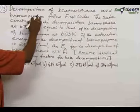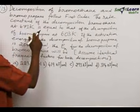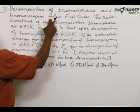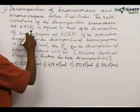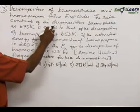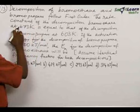Problem number 13: Decomposition of bromoethane and bromopropane follow first order. The rate constant of the decomposition of bromoethane at 673 Kelvin is equal to the rate constant of decomposition of bromopropane at 603 Kelvin.